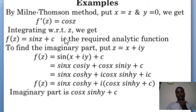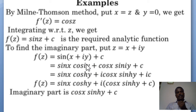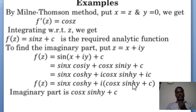To find the imaginary part, put z = x + iy. So f(z) = sin(x + iy). Using the formula sin(a + b) = sin a cos b + cos a sin b: sin x cos(iy) + cos x sin(iy). Now cos(iy) = cosh y and sin(iy) = i sinh y. Separating real and imaginary parts, we get sin x cosh y + i(cos x sinh y) + ic. So the imaginary part is v = cos x sinh y + c.